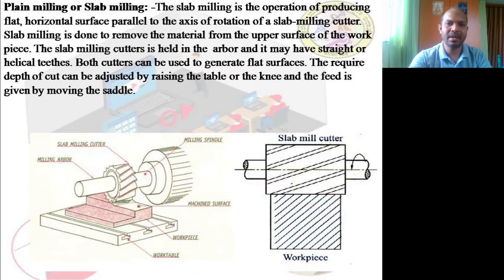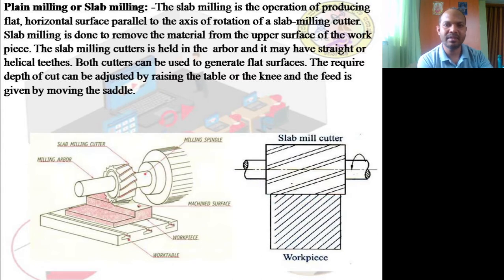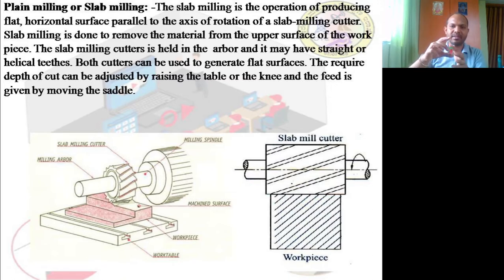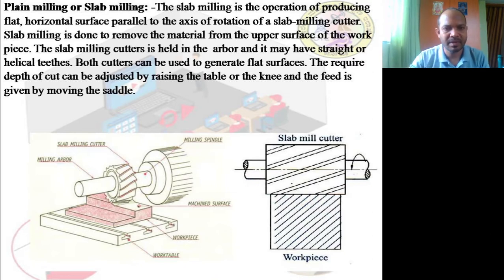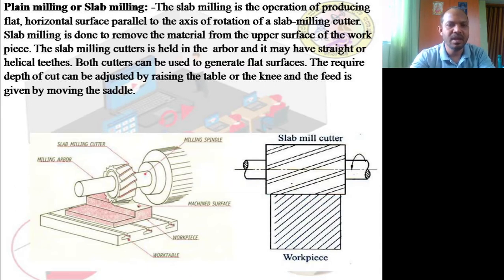The workpiece is held on a magnetic work table using a magnetic chuck, which holds it very firmly. It can also be fixed with mechanical methods. Slab milling produces a flat or horizontal surface parallel to the axis of rotation — as the tool rotates, material is removed in the clockwise direction, and the machined surface is what remains.